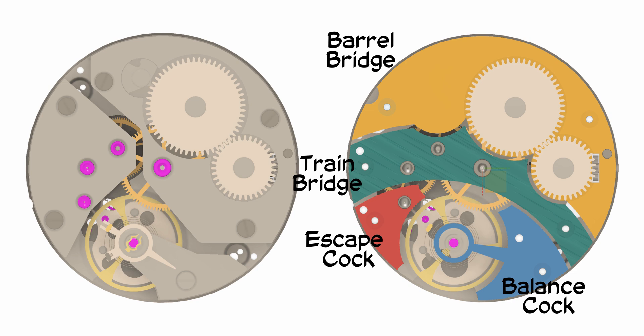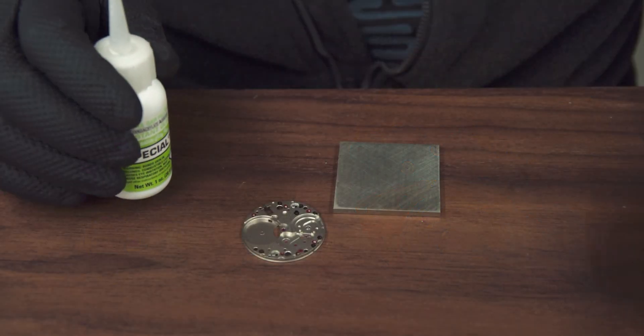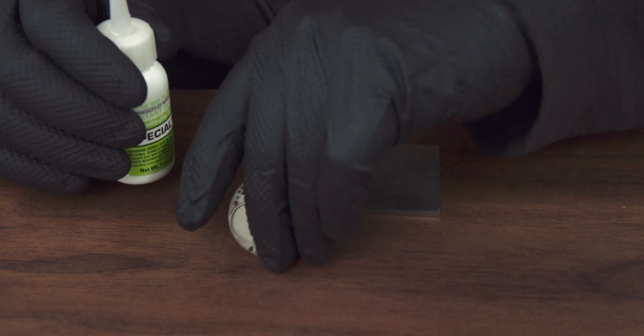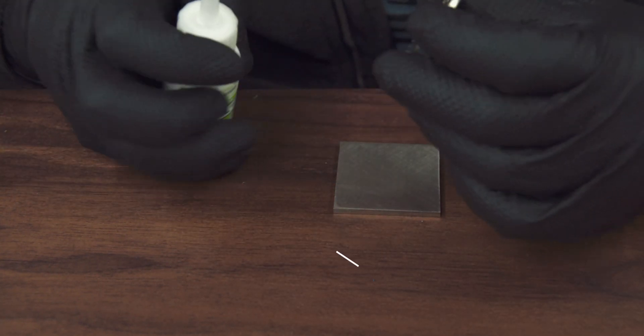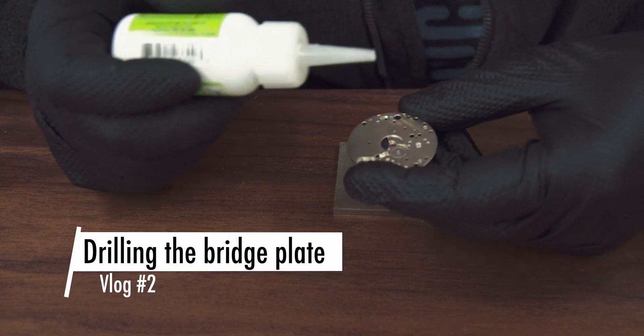Now that we have a blueprint for the work we can start working in metal. The new plate I'm working with is three millimeter thick nickel silver. I've got a larger piece than needed to make it easier to hold in the lathe later on.